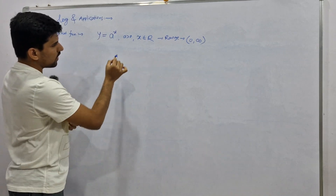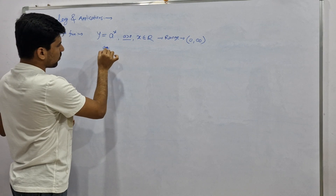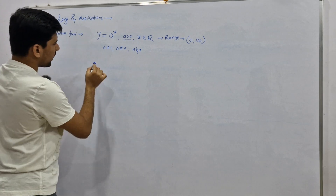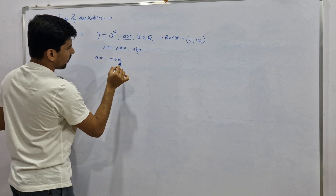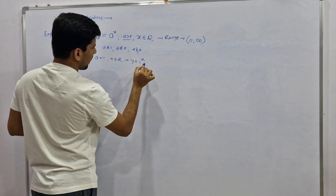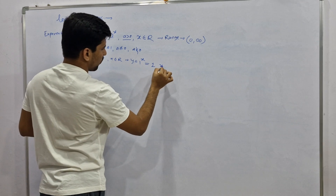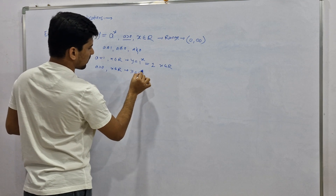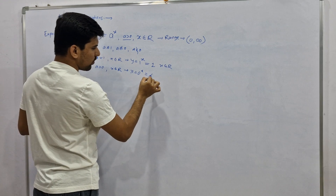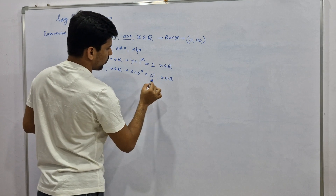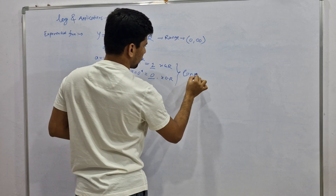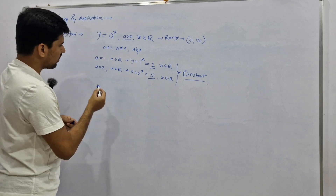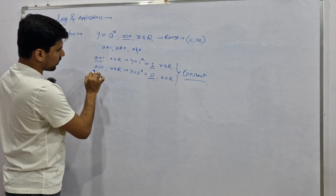You may ask: why must a be greater than zero, and why is a not equal to one, not equal to zero, or less than zero? If we take a equal to one and x belongs to R, then our function will be y equals one to the power x, which equals one for any x in R. Similarly, if a equals zero and x belongs to R, then zero to the power x equals zero for any x in R. Both of these are constant functions, and constant functions have no meaningful exponential behavior, so we do not take a equal to one or a equal to zero.